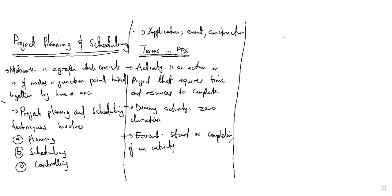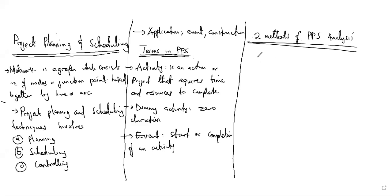We've been able to explain this to the best of our ability. Where we stopped is the two concepts of analysis of project planning and scheduling — the two methods of project planning and scheduling analysis. We talked about the critical path method, CPM, and I explained that sometimes they call it CPA.